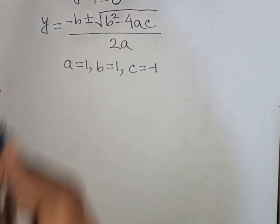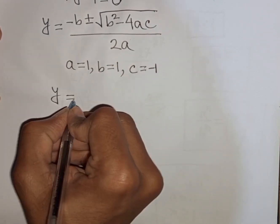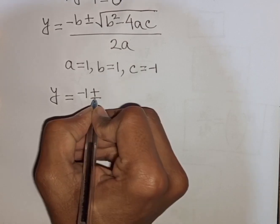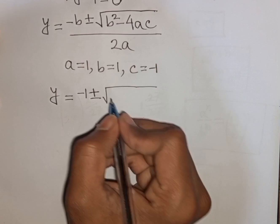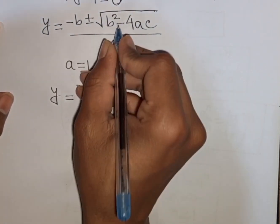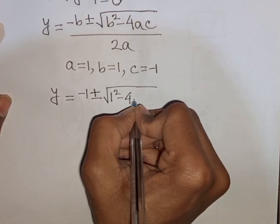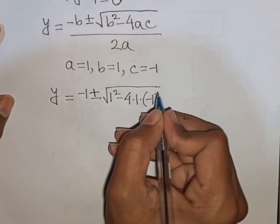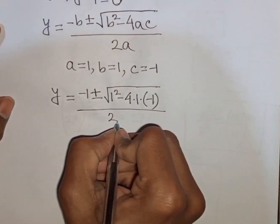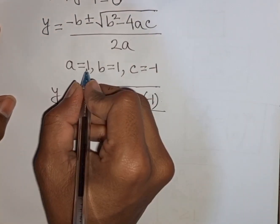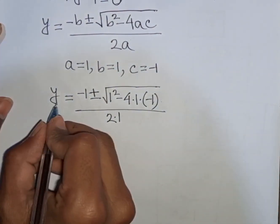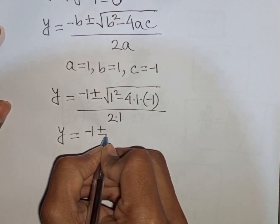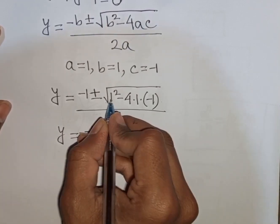So we can write: y equals minus B, that means minus 1, plus or minus square root of B squared — that means 1 squared — minus 4 times A, that means 1, times C, that means negative 1, all divided by 2 times A, that means 2.